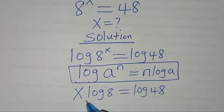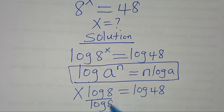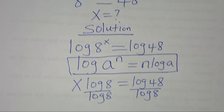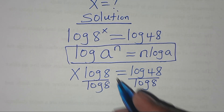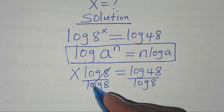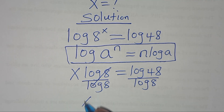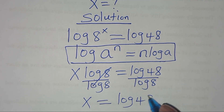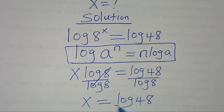From here, we divide both sides by ln(8), so that x is equal to ln(48) divided by ln(8).